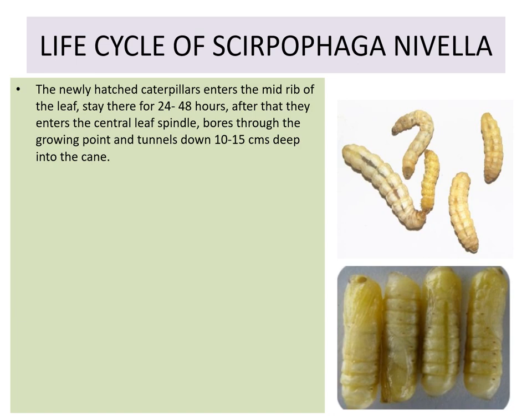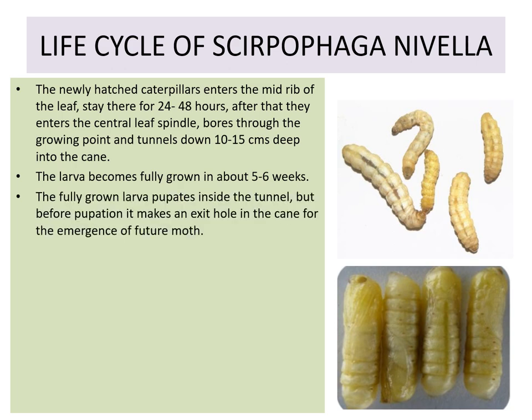After that, the caterpillars enter the central leaf spindle, bore through the growing point, and tunnel down 10 to 15 cm deep into the cane. The larvae become fully grown in about 5 to 6 weeks.